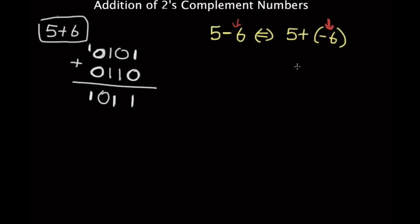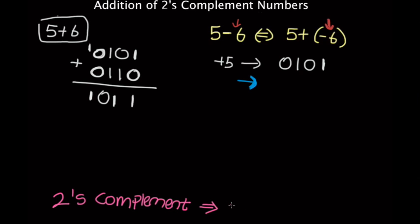And 5, like I said, is 101. That is positive 5. And to get negative 6, we have to get the positive value of 6, and make the 2's complement of that number to get negative 6. Please note that your 2's complement is just the representation of negative binary numbers.